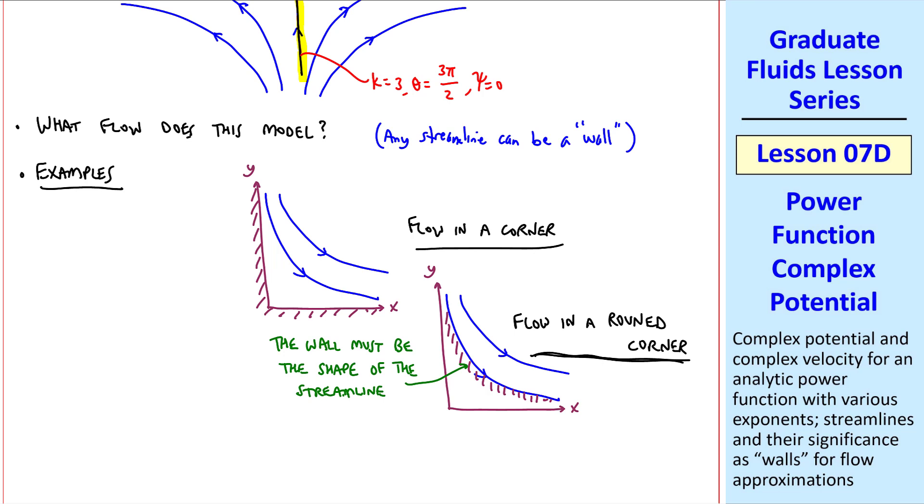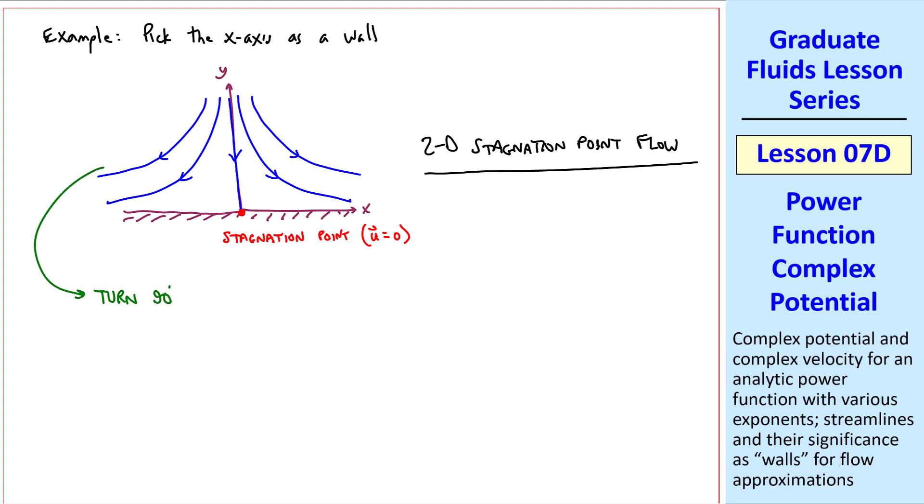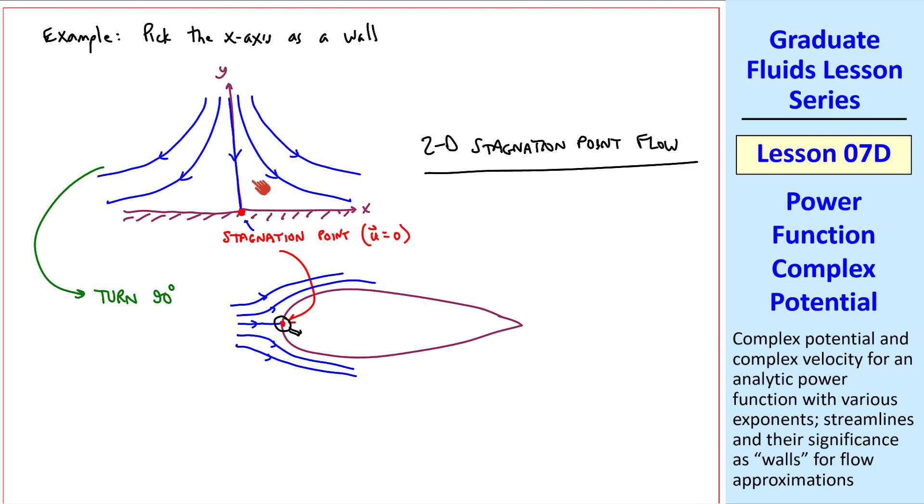We can't have just an arbitrary curved surface. As another example, we'll pick the entire x-axis as a wall. And keeping in mind that this y-axis is also a streamline, the origin turns out to be a stagnation point where the velocity is 0. So this flow represents 2D stagnation point flow. If you turn this flow 90 degrees, this flow becomes useful later on to model flow into a stagnation point at the leading edge of some 2D body, like an airfoil. If we get out a magnifying glass and turn our head 90 degrees, this is what we see, stagnation point flow. This will also be useful later on when we attach a boundary layer along this body.